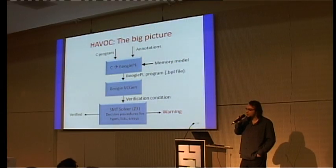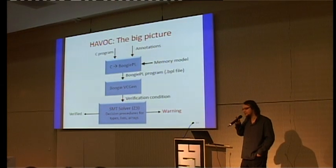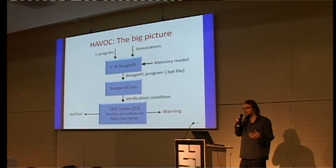Q: Is Havoc itself released as open source? A: Boogie is open source and available at boogie.codeplex.com — you can take it and apply it yourself. However, the part that does the translation from C to Boogie is not open source, as it's tightly coupled to the Microsoft compiler. To reproduce this work for GCC, you would need to write a compiler plugin doing the C-to-Boogie translation, then use Boogie for all the same analysis.